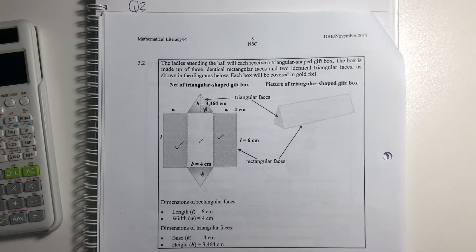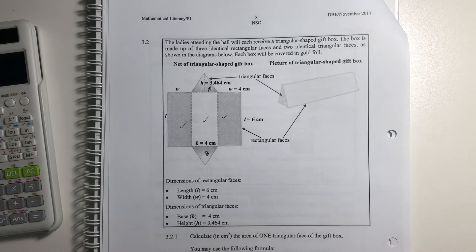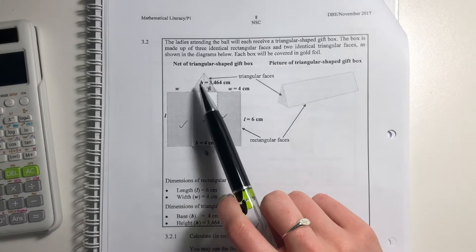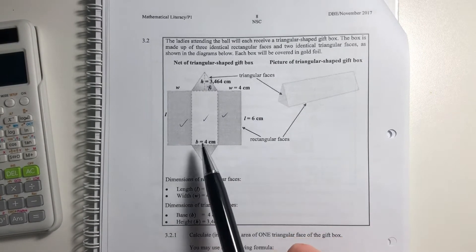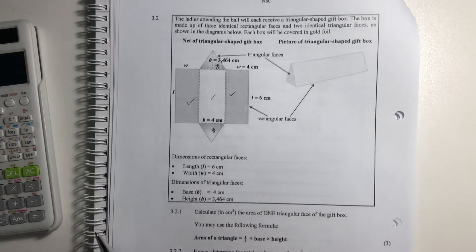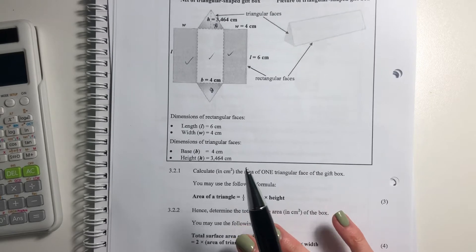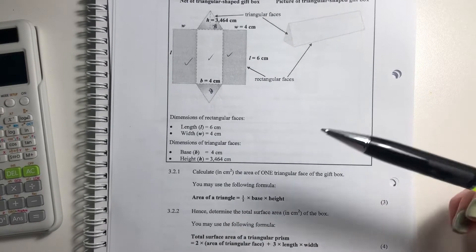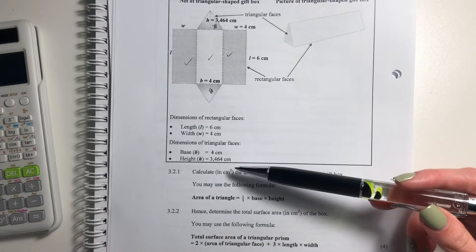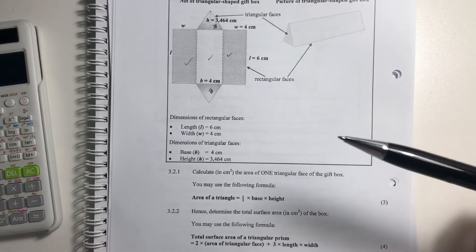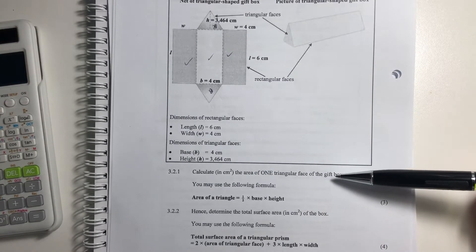As shown in the diagram below, each box will be covered in gold foil. I'm not sure why, but that's what it is. They've given us some dimensions: height, width, length, and breadth, so they've pretty much given us everything. They've also written them down here, so we know that we're probably going to do area and volume here. So let's see.